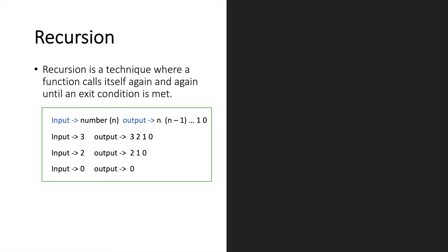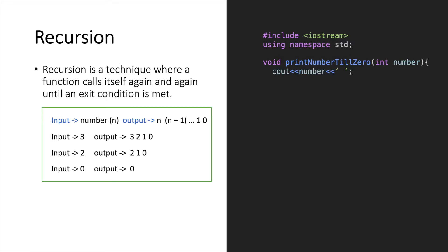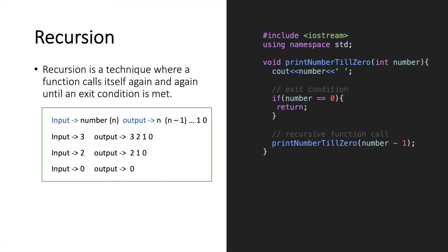Now let's write a recursive function to simulate this. Suppose I write a function print_number_till_0, which takes an integer as input, which is the starting number, and as the first step simply prints out that number. Now within this function, we call the same function again, but now we will subtract 1 from the number and pass it as the parameter of the next function call. This function will call itself again and again by subtracting 1 from the number at every step. This can lead to an infinite call if we don't have an exit condition in place, and for this example, the exit condition is when the number is equal to 0, we will return out of this function.